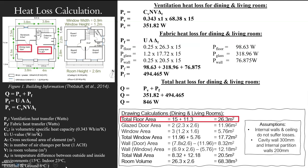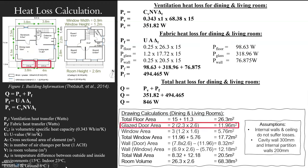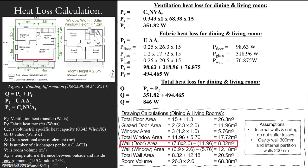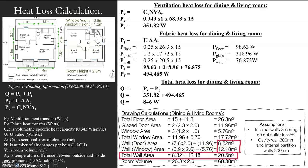Moving on to areas. I look at my floor area because I need to know how much heat is going to transfer through the floor to the ground. I look at my glazed doors and windows together because they share the same U-value. Then I look at my walls — the ones that the doors are on and the ones that the windows are on — to find how much actual wall area heat is going through. And my volume is specifically for the ventilation heat loss, so I need to know the volume of my space.